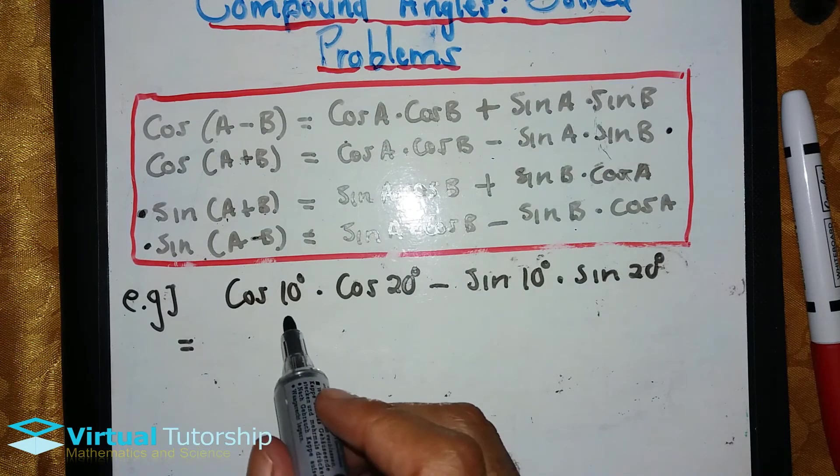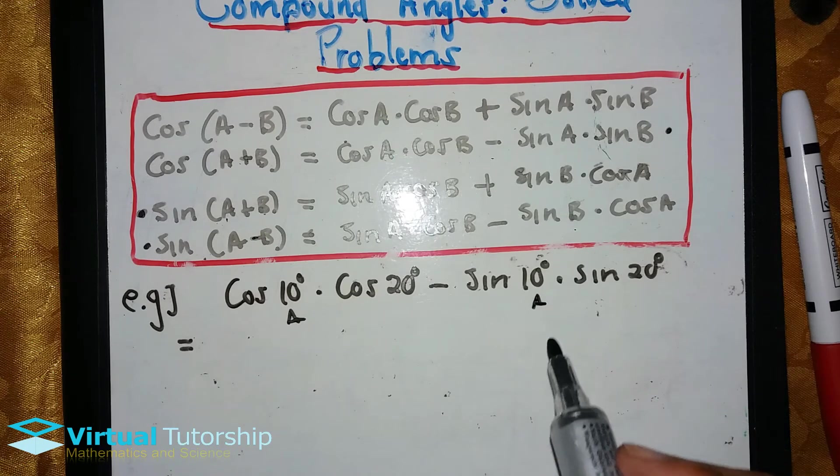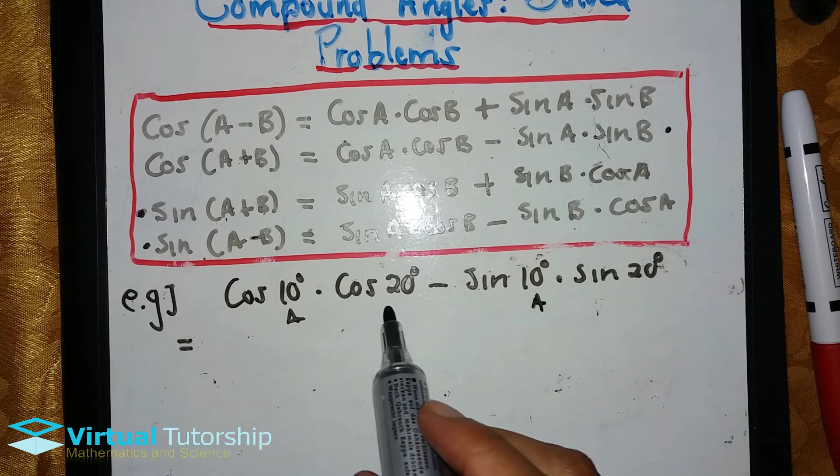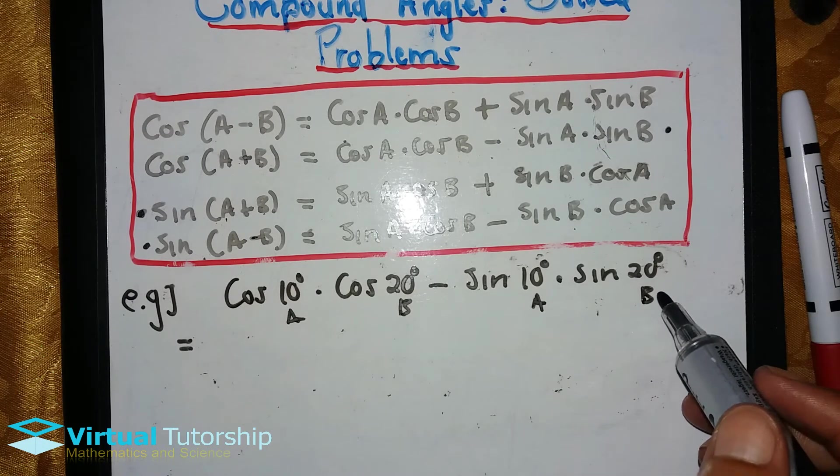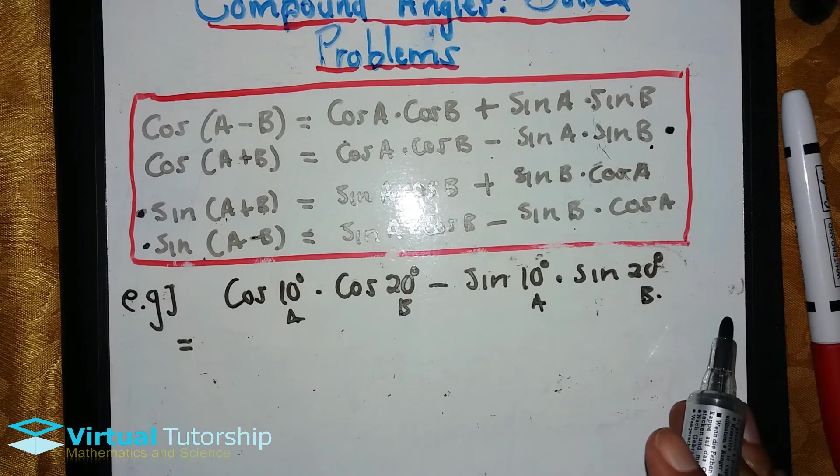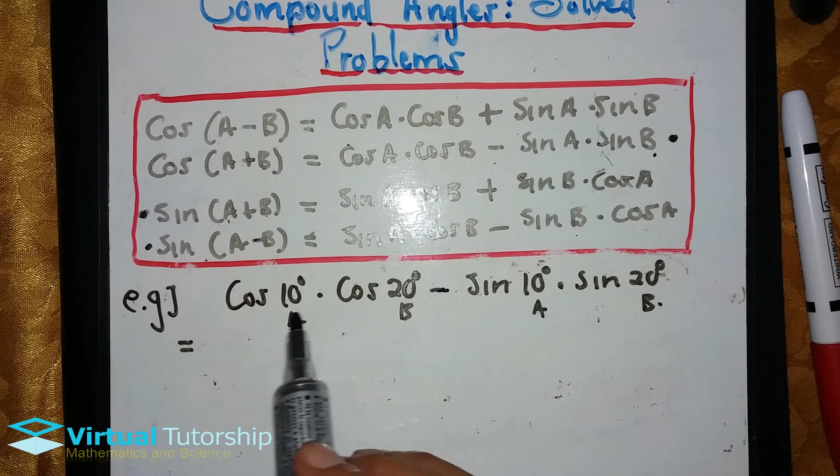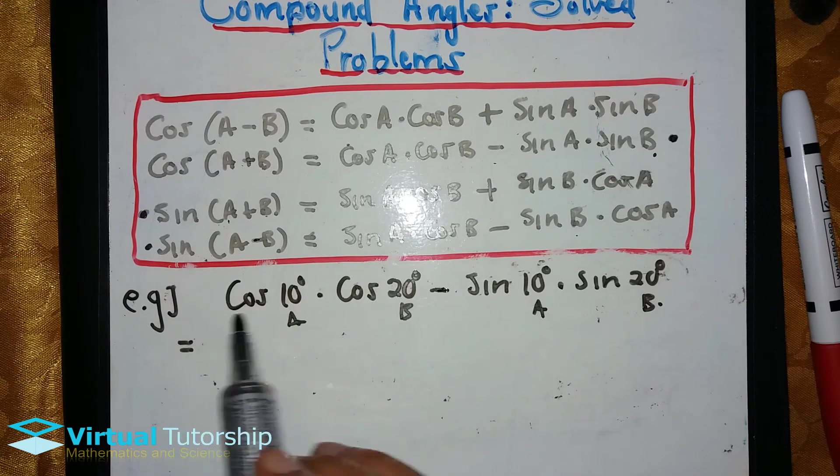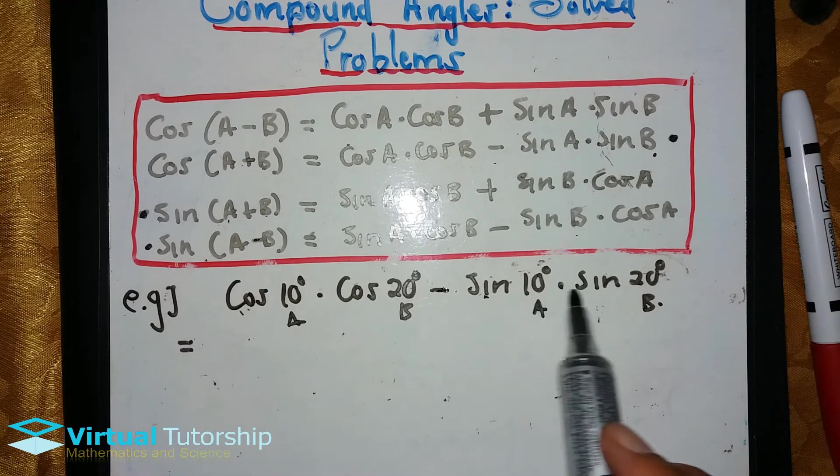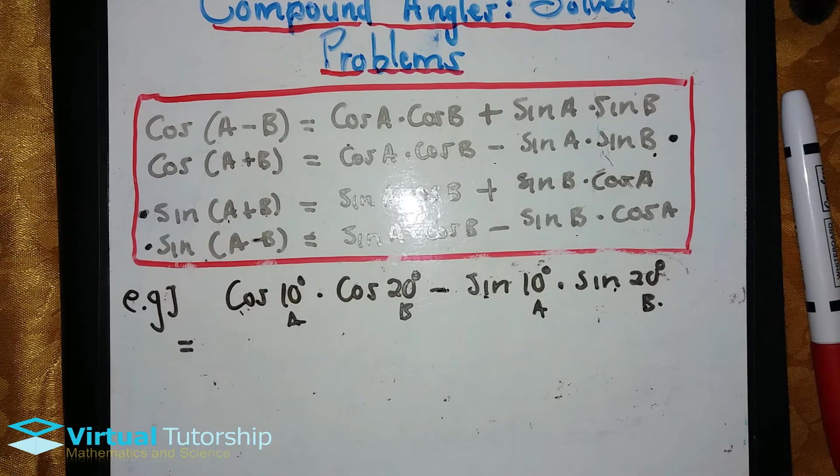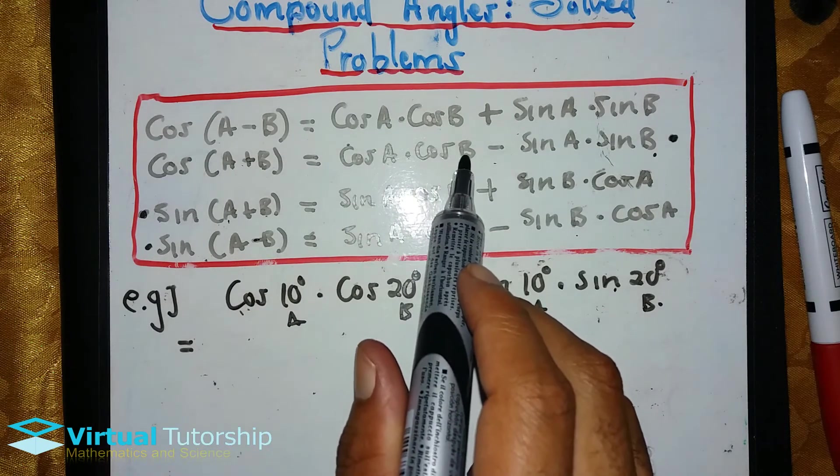So we have A as 10 degrees and B as 20. This is the compound angle form with a negative sign between terms and cosine by two as the first term and sine by two as the second term. So remember, in the forward direction as well as the backward direction.